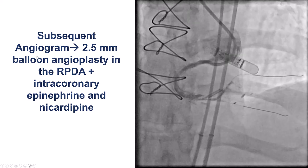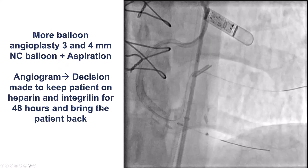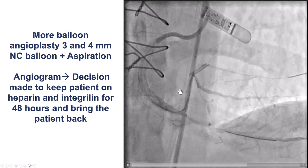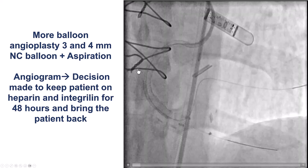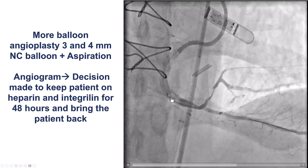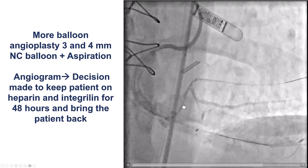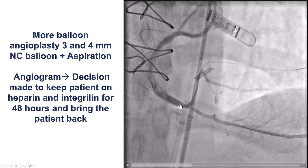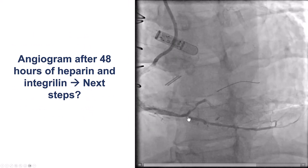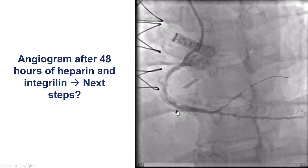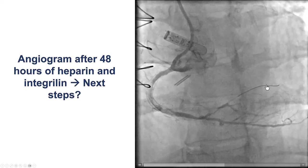We gave intracoronary epinephrine and nicardipine, having already given 2B3A inhibitors, and did more aspirations, but there was still poor flow and large thrombus burden. In cases like this, after many aspirations and pharmacologic treatments, we sometimes let the patient go to the floor on heparin and a 2B3A inhibitor — heparin and eptifibatide — and bring them back two days later. We did that, hoping for a better angiographic image, but to our dismay, there was still a large filling defect and no flow into the right posterolateral.